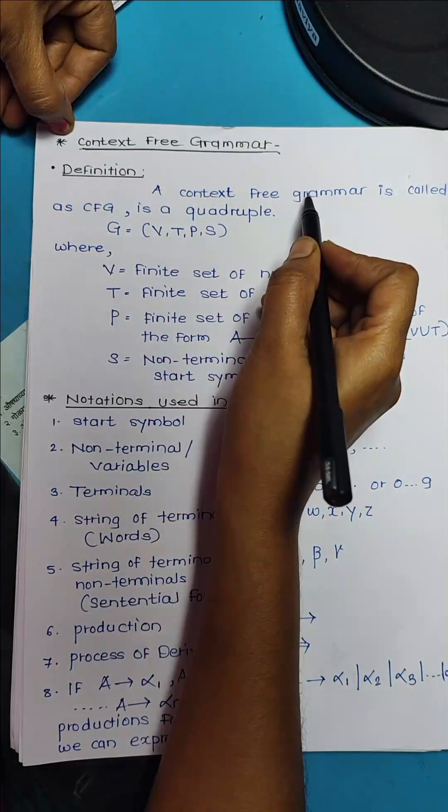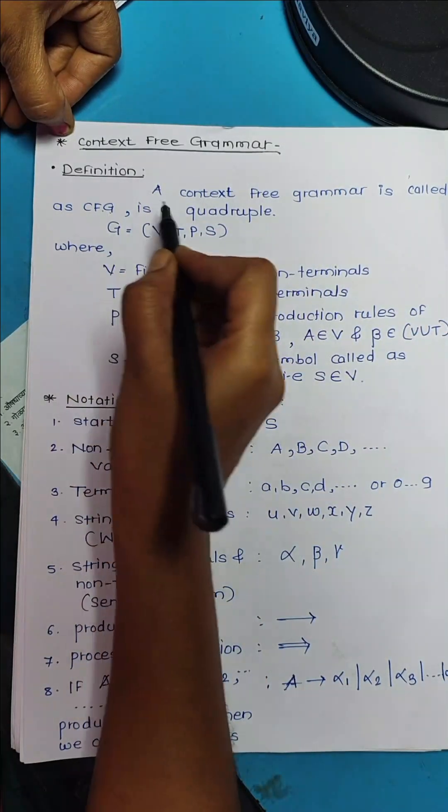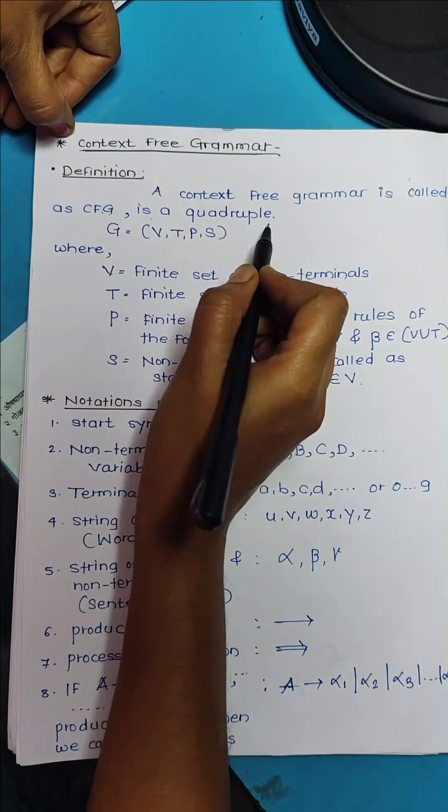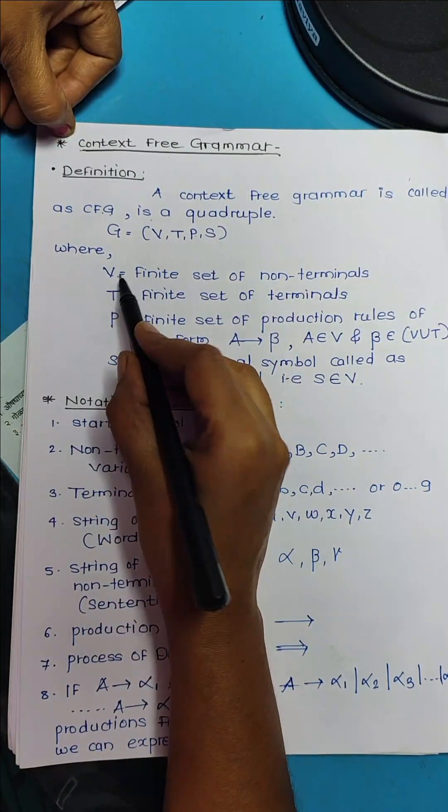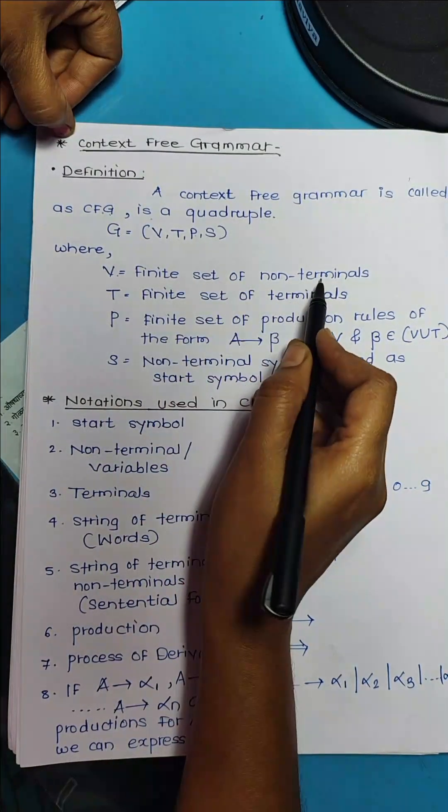A context-free grammar, called CFG, is a quadruple. Therefore, G equals V, T, P, S, where V is a finite set of non-terminals.